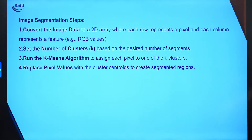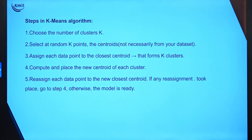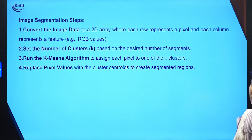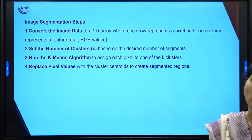When talking about image segmentation steps: first, we convert the image data to a 2D array where each row represents a pixel and each column represents a feature. Second, we set the number of clusters. Third, we run the k-means algorithm. Fourth, if results are not as per requirement, we replace pixel values with the cluster centroid to create segmented regions. These are the steps followed when using clustering for image segmentation.